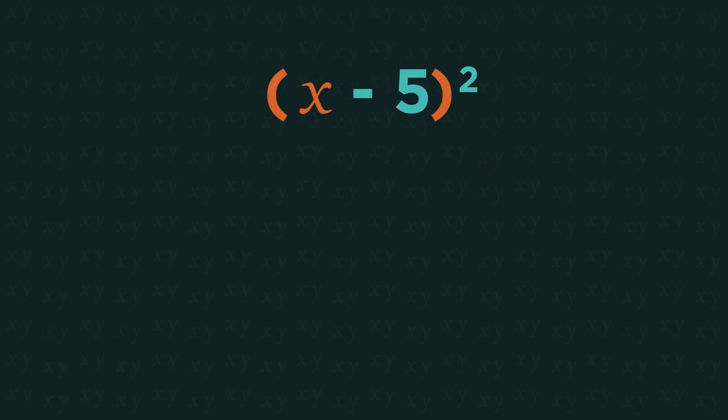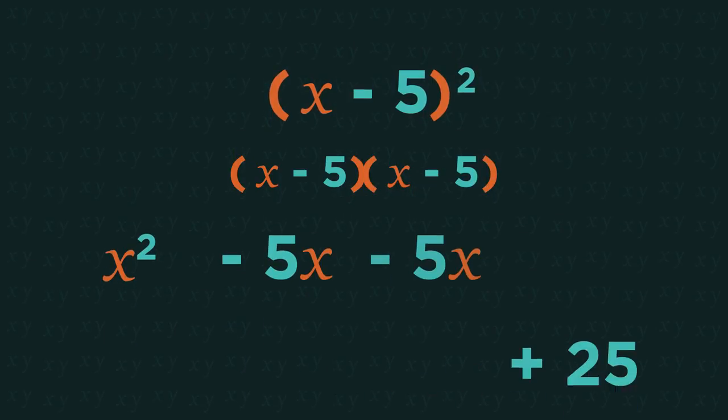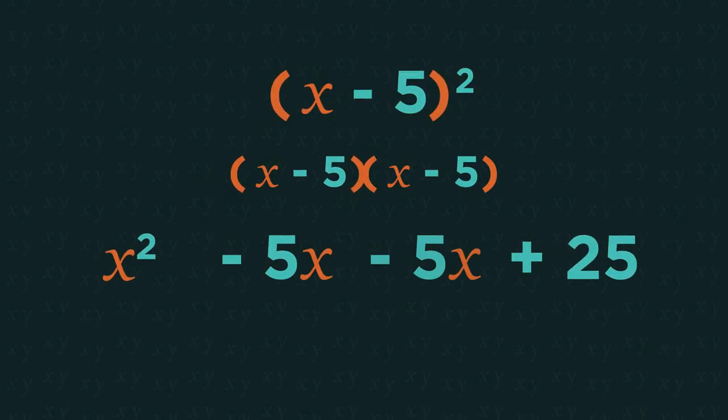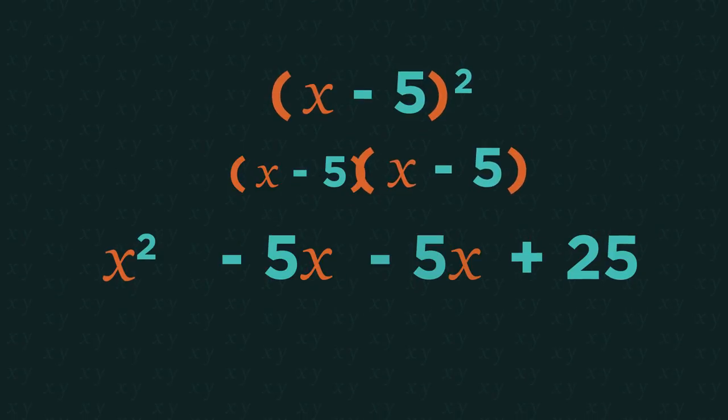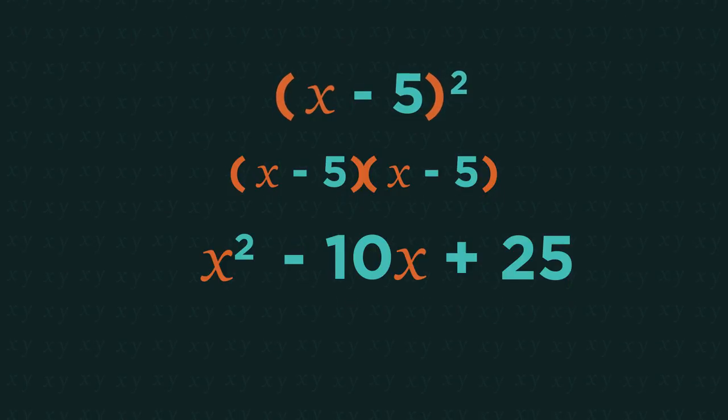So to recap, when brackets are being squared, write them out in full, one bracket next to the other, then expand them. Multiply everything in the first bracket by everything in the second bracket and then simplify. Make sure you end up with exactly three terms.